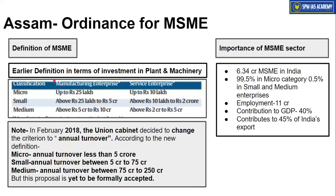Let us also look at the basic definition of MSME. The Indian government changed the definition of MSME this year — it is now based on annual turnover rather than investment in plant and machinery. Under the new definition: micro sectors are those whose annual turnover is less than 5 crore; small sectors are those with annual turnover between 5 to 75 crore; and medium sectors are those with annual turnover between 75 to 250 crore.